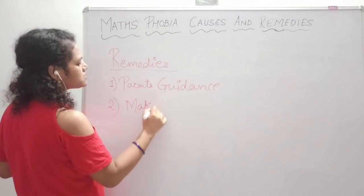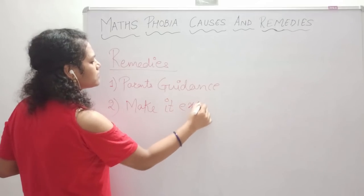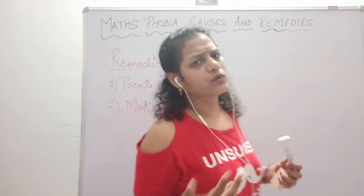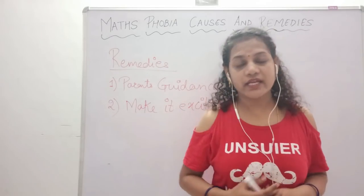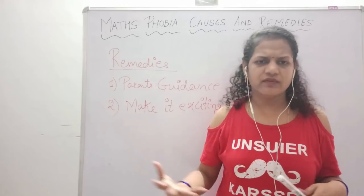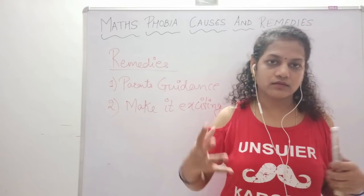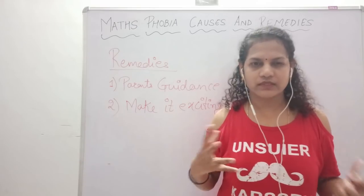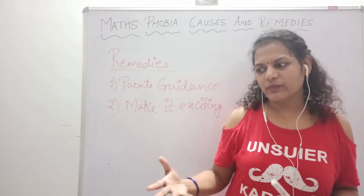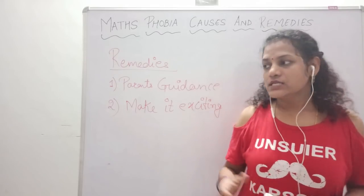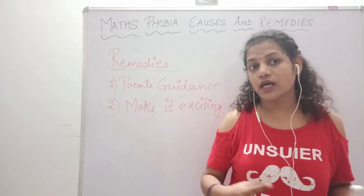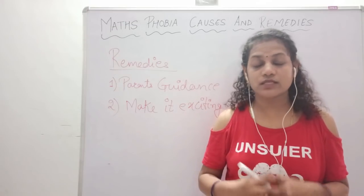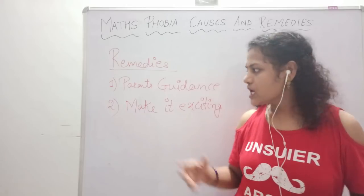The next remedy is to make the subject exciting. Some children may get bored while doing maths. For that purpose, there are many activities you can find — on TV or in books. Use those to make maths exciting so that the child develops interest in it. For example, if you are teaching numbers, ascending order, or descending order, teach it in a very exciting and engaging way.